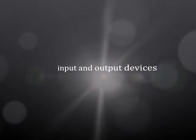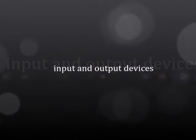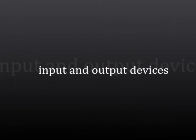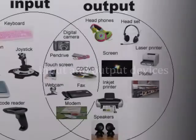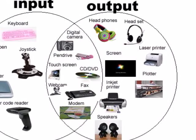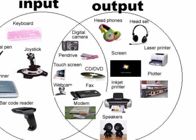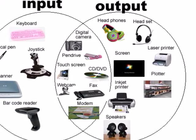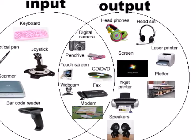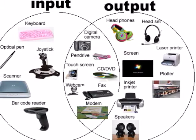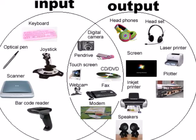Now we will learn about input and output devices. An input device is hardware used to provide data and control signals to the computer, while an output device is any device used to send data from the computer to another device or the user. Output devices include monitors and printers, while input devices include a keyboard or a mouse.